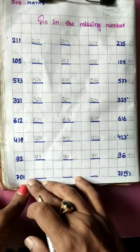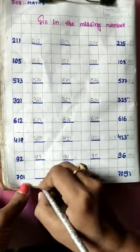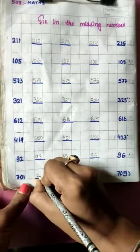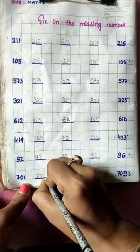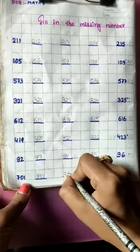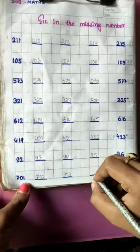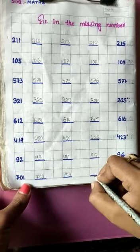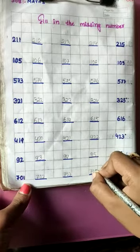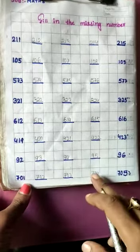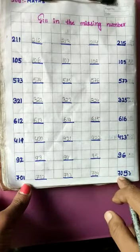Now next line: 701. After 701 — which number is missing? 701 and 702, 703. After — which number is missing? 701 and 704. After 704: 705.